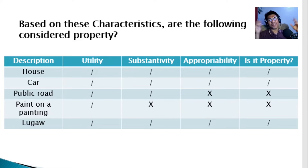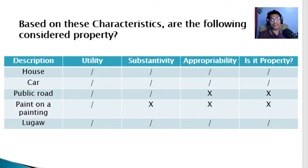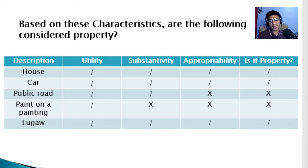Is lugaw (rice porridge) property? It serves a purpose — it's food, so it has utility. It meets substantivity because it can be independent of other things and segregated from its class. And it meets appropriability — lugaw can be sold, donated, given away, and of course eaten. So lugaw is property.